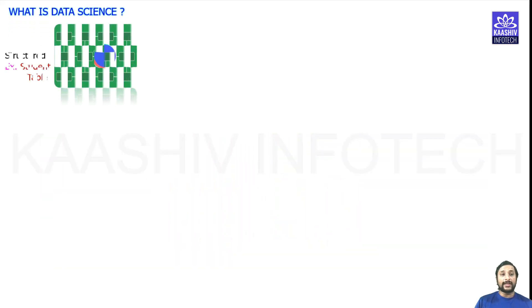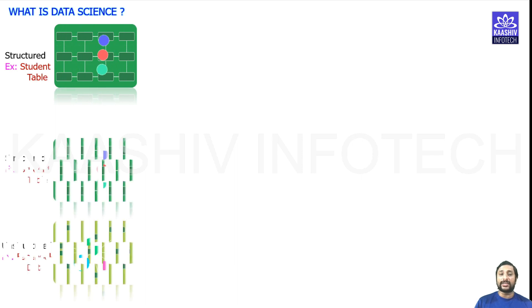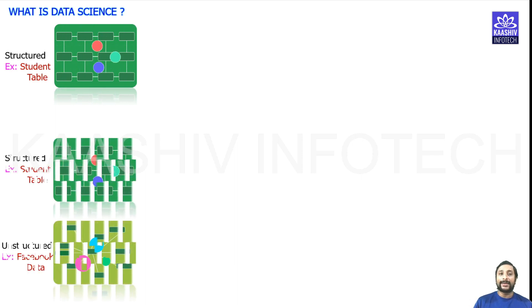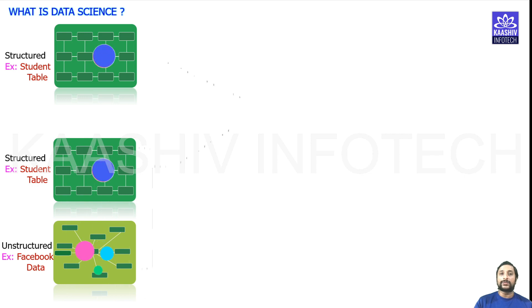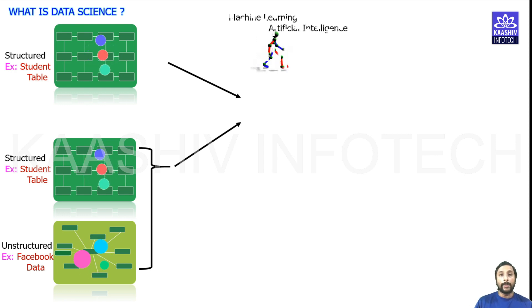Before going into data science, we should understand what is structured data. Structured data is nothing but the normal students database where you got the tables and everything. Then you have unstructured data, which is nothing but your Facebook, Google data, or WhatsApp data. So you got structured and unstructured data.